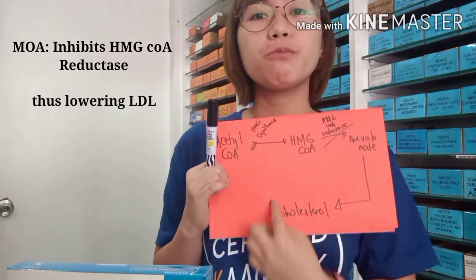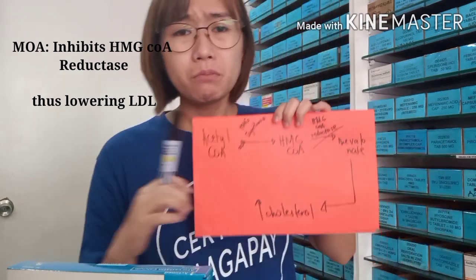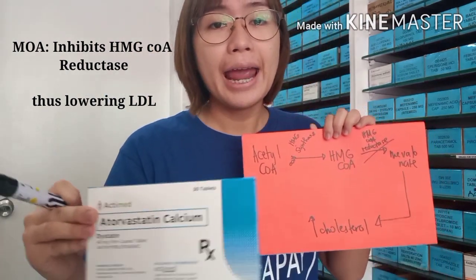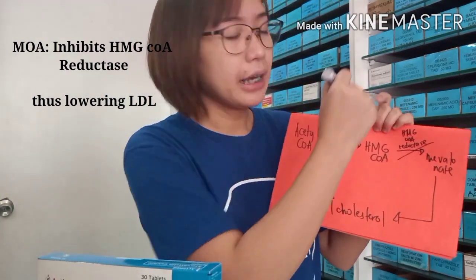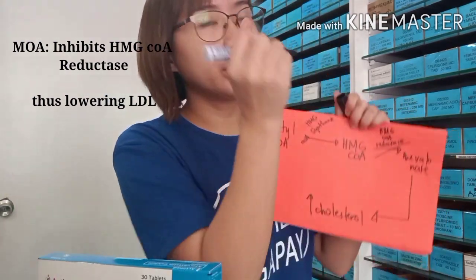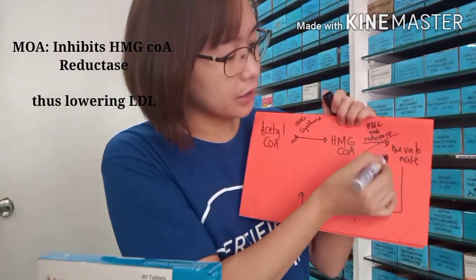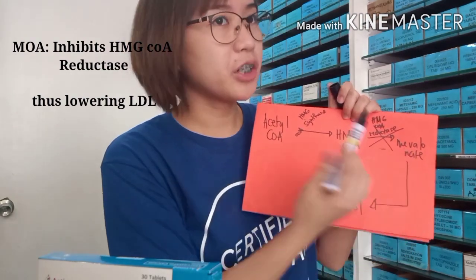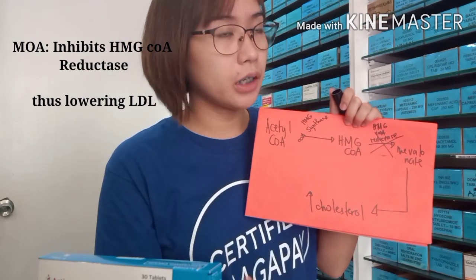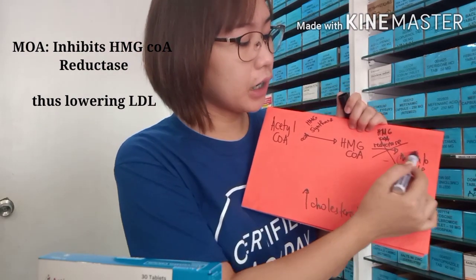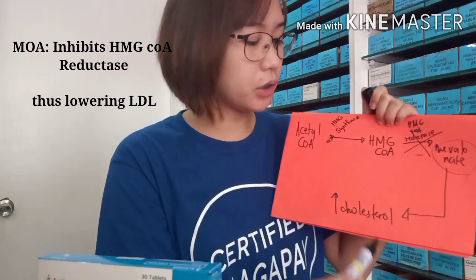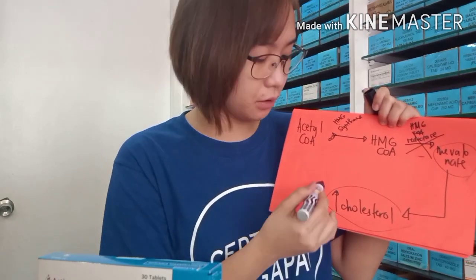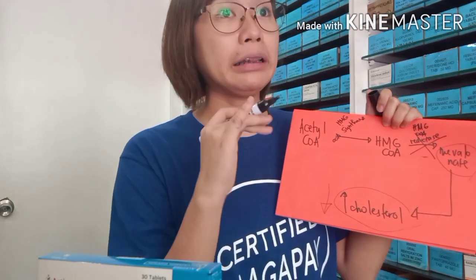When mevalonate is stimulated, it will produce a lot of cholesterol in our body. Our statins work by inhibiting the so-called HMG-CoA reductase. When the reductase is inhibited, nothing will produce cholesterol, meaning cholesterol levels will go down or will be maintained and controlled.